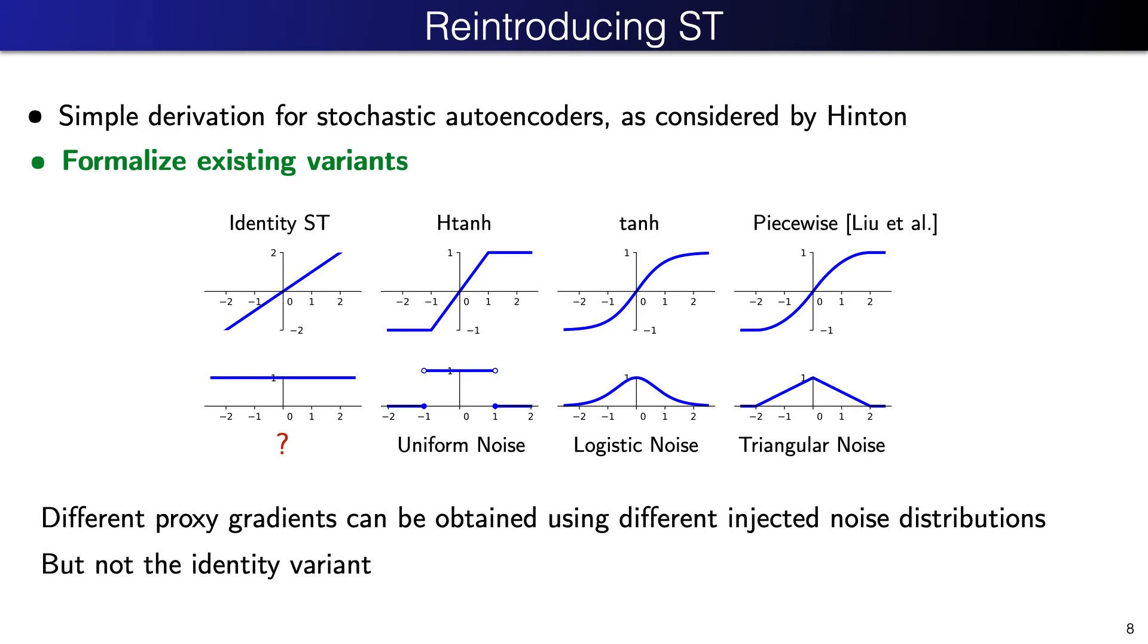We want to reintroduce the straight-through estimator in the right way. Towards this goal, we propose a simple derivation for stochastic autoencoders, which is the setup originally considered by Hinton and Krusevsky. We then formalize existing empirical rules. For these three variants on the right, we can choose the injected noise distribution, such that it recovers the empirically proposed rules, up to sampling the noise on the forward path. We cannot obtain the identity straight-through variant on the left, proposed by Banger et al.